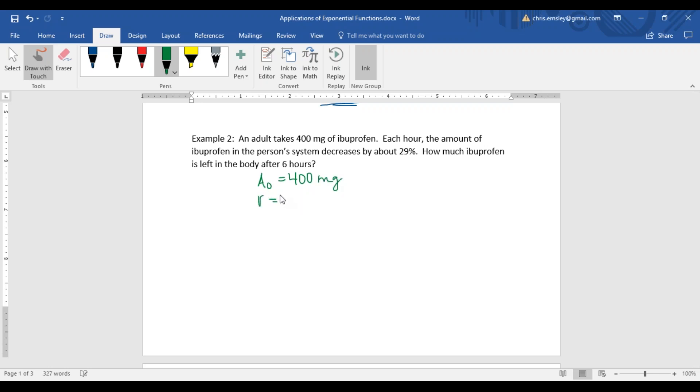We have a rate. This time it's a decay rate, not a growth rate. It's 29%, and when we use that in our problem, we're going to change it to its decimal form. We also are given a time - we want to know how much ibuprofen is still remaining after 6 hours.